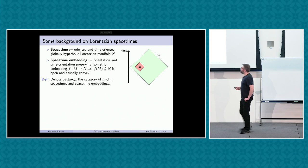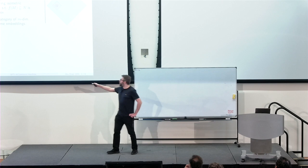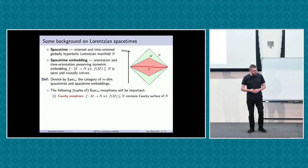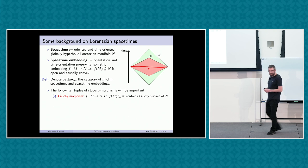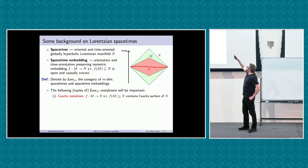Having identified the relevant space-times and space-time embeddings, I package them into a category, which people traditionally call Log M — the category of M-dimensional space-times and space-time embeddings. As a consequence of Lorentzian geometry, there are distinguished classes of morphisms in this category that play an important role when thinking about the algebraic structures encoding quantum field theories.